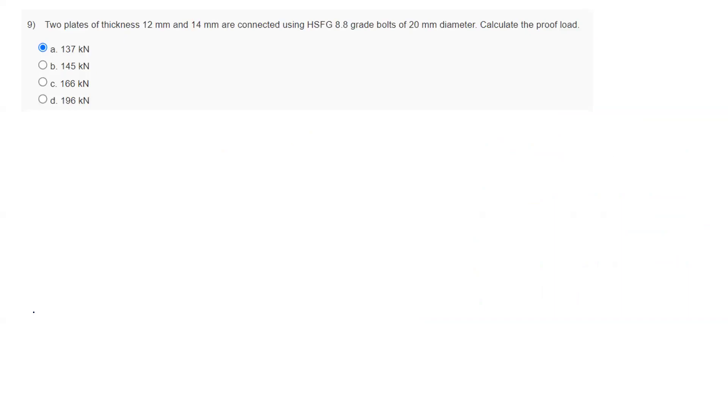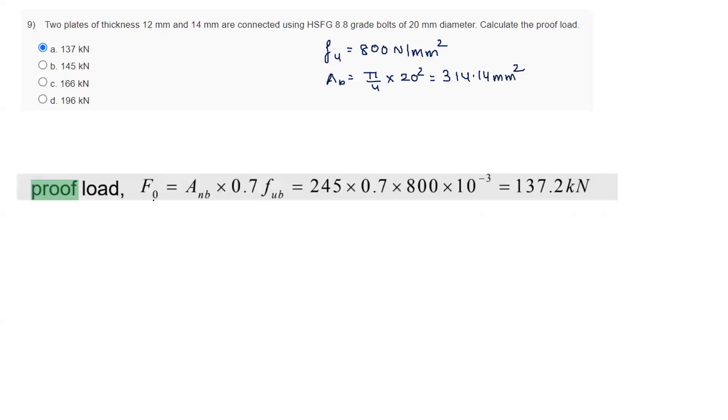Problem 9: Two plates of thickness 12mm and 14mm are connected using HSFG 8.8. 8.8 means Fu equals 800 Newton per mm square. Area of bolt is 5 by 4 into 20 square, which comes to 314.14 mm square. Calculate the proof load. The formula for proof load is: F0 equals ANB into 0.7 FUB. ANB we multiply by 0.78, then by 0.7 into 800. 800 is FUB. This comes to 137.2 kilonewtons, so we have 137 kilonewtons.